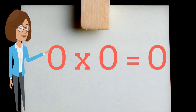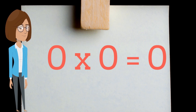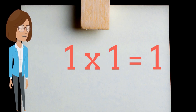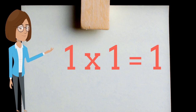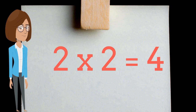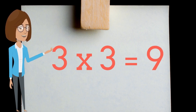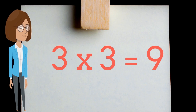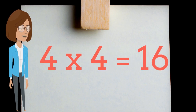Zero times zero is zero. One times one is one. Two times two is four. Three times three is nine. Four times four is sixteen.